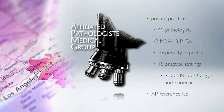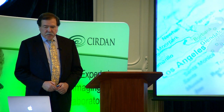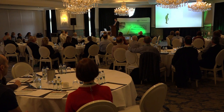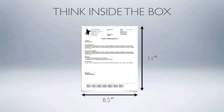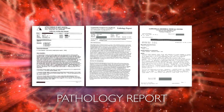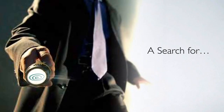I'm in a private practice group predominantly in Southern California, but we cover multiple states — Arizona and up north in Oregon — and we have a reference lab. Think of the pathology report as a box. That box measures eight and a half by eleven, and the things we put in that box are text and images. We put in branding with our logo, format it, add URLs, barcodes, prognostic information — all those things go into that box.